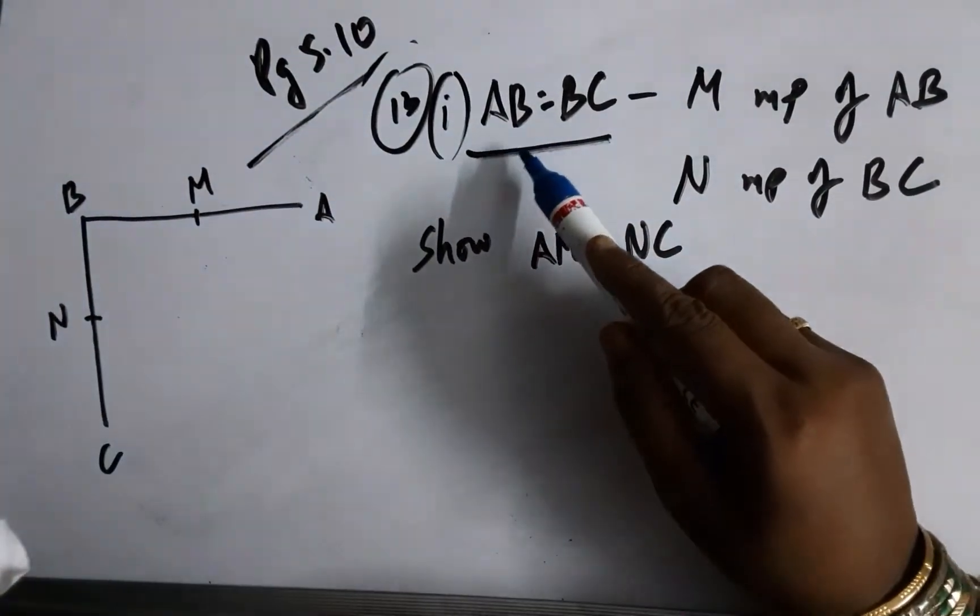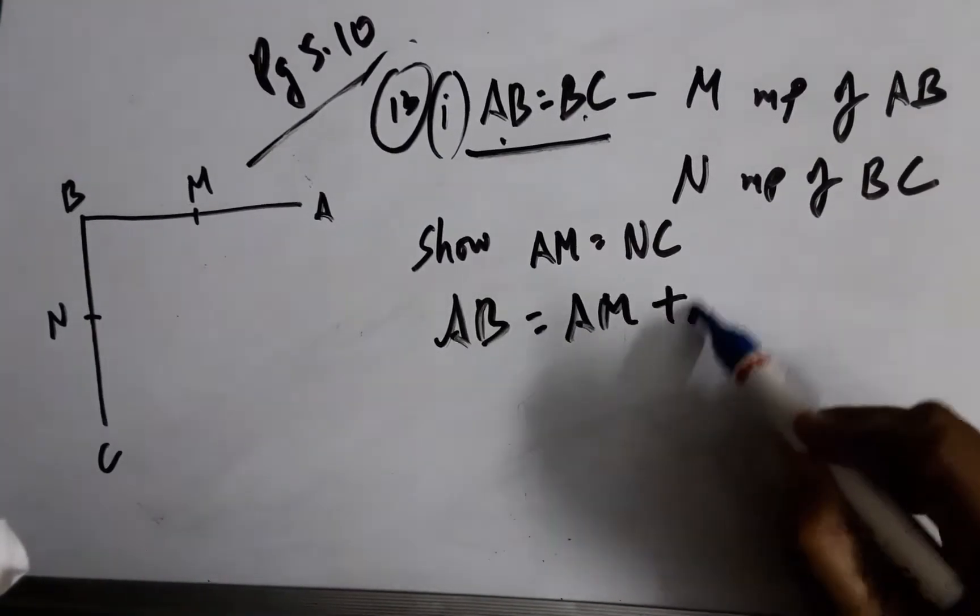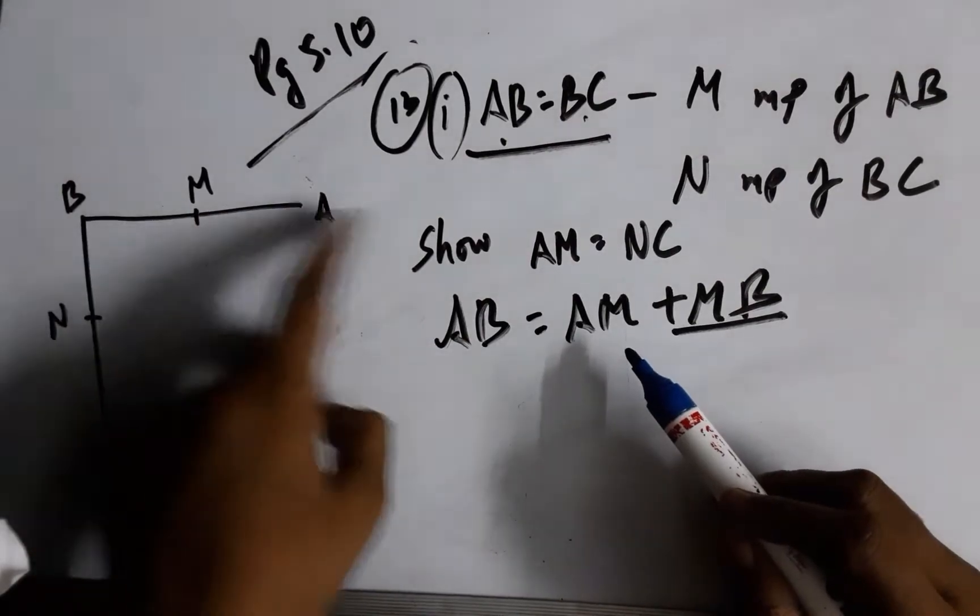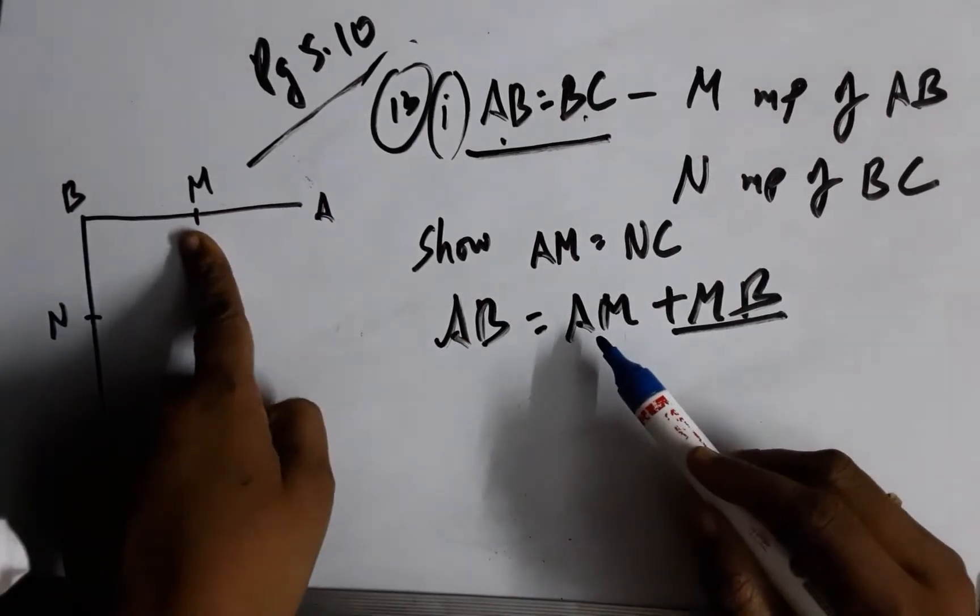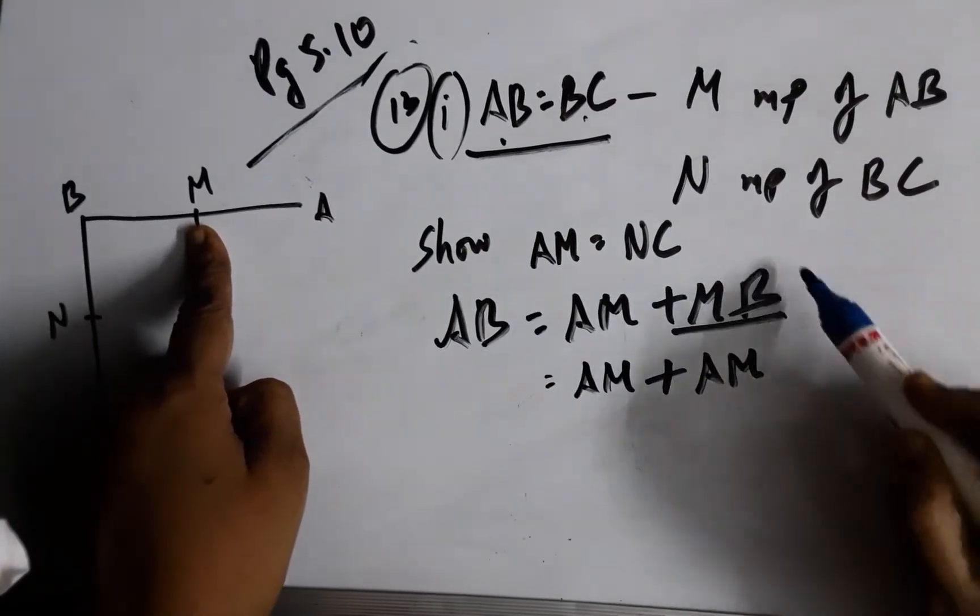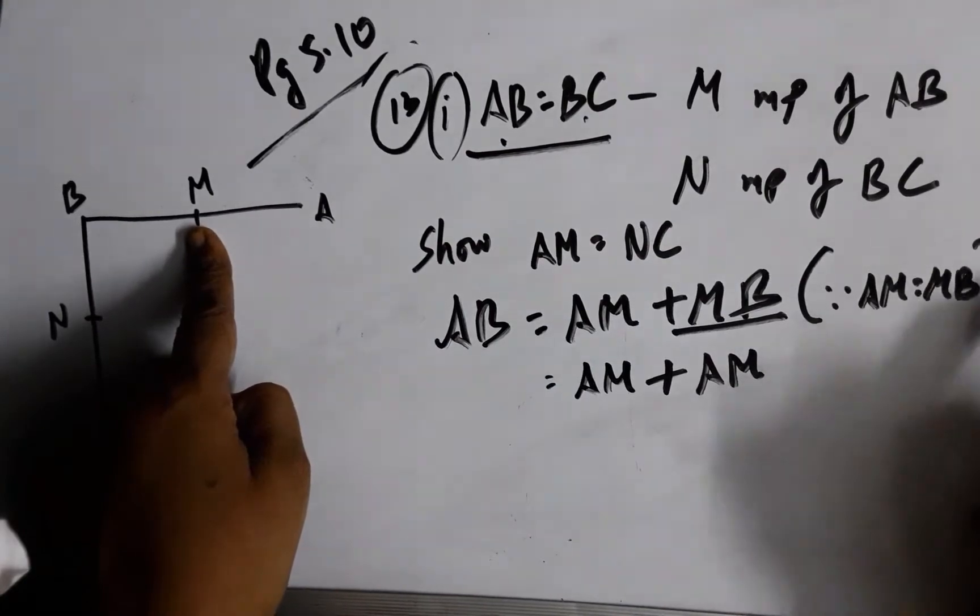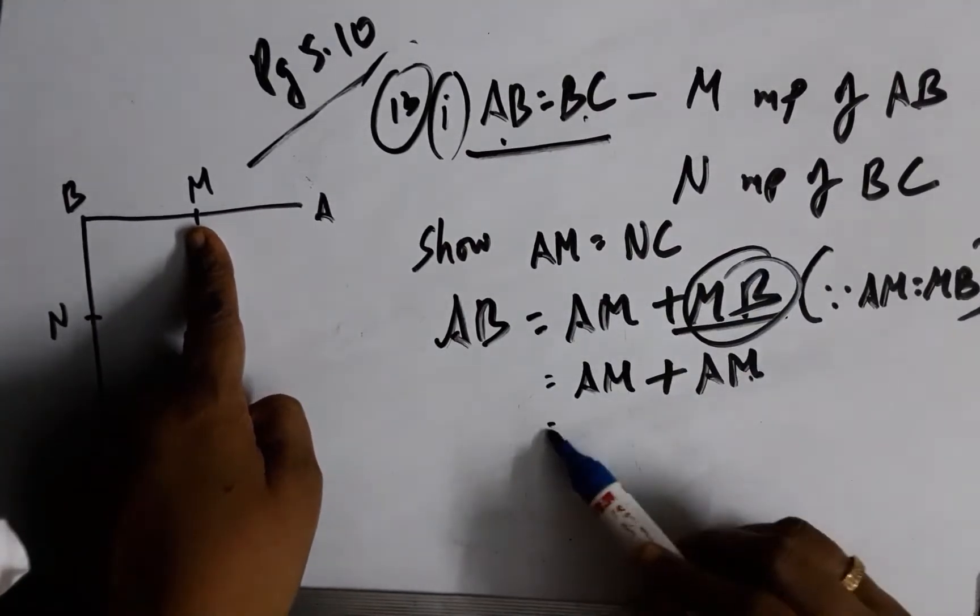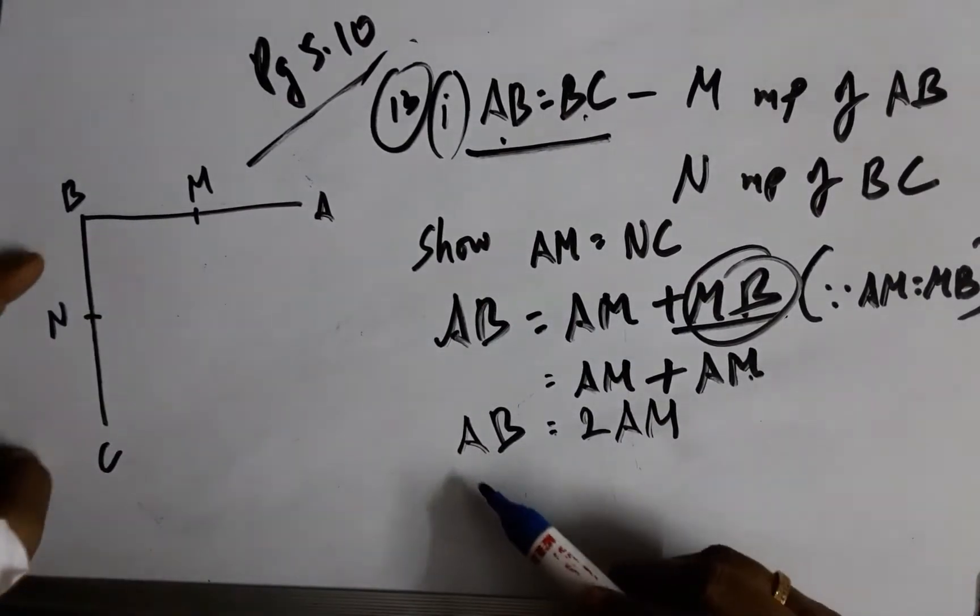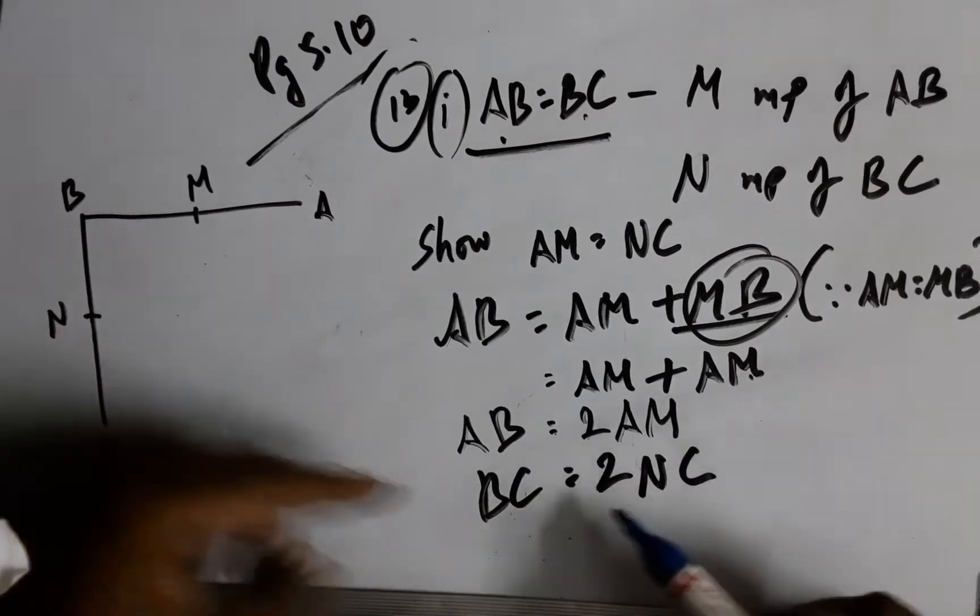As we can see, AB can be written as AM plus MB, but MB can also be replaced by AM because M is midpoint. Since AM equals MB, I can replace MB by AM also and I can say that it is twice of AM. Similarly, BC is also twice of NC.